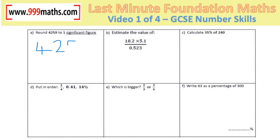The first significant figure is the four, so the two rounds down to four thousand.